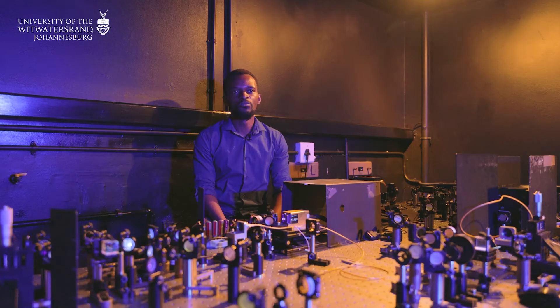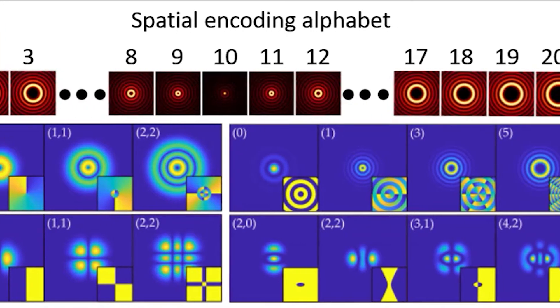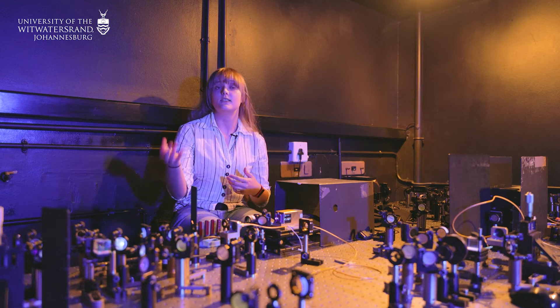By structuring light, what we can do is create independent spatial patterns, which would, for example, map onto an alphabet. We use these structures because they have special properties, like they don't interact. So you can pile a lot of structures on top of each other and then when you send it to the other end, you can un-pile them without losing information.